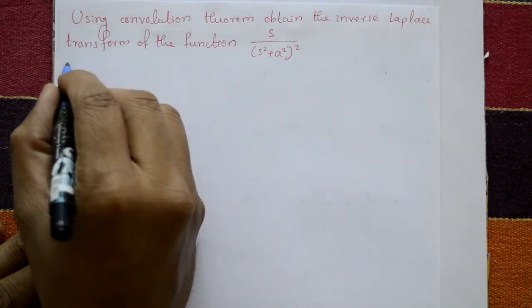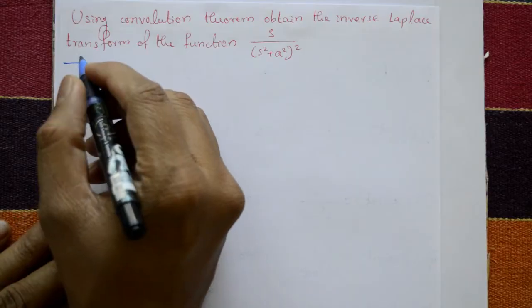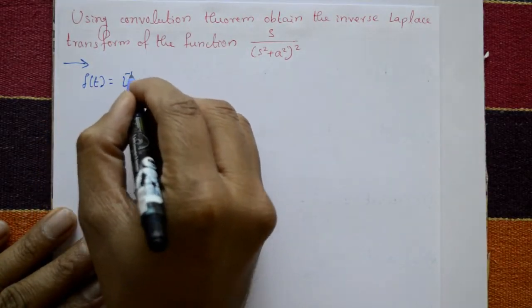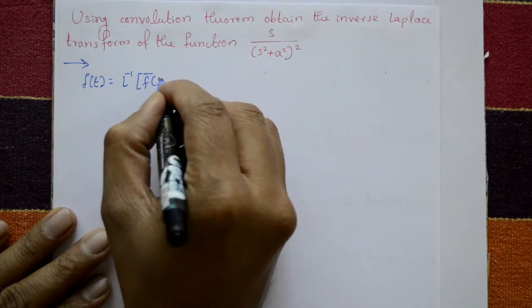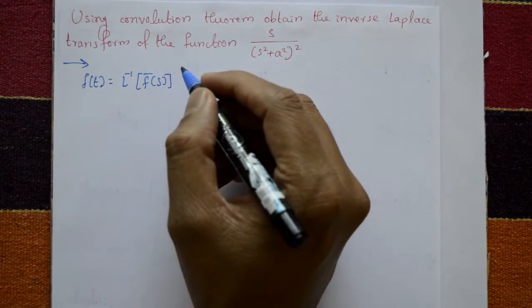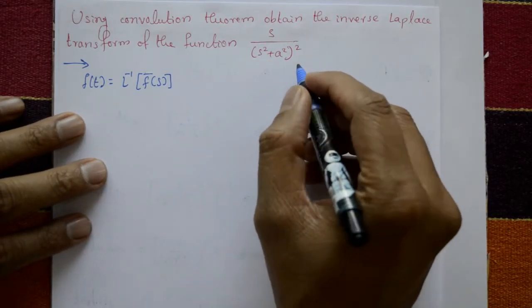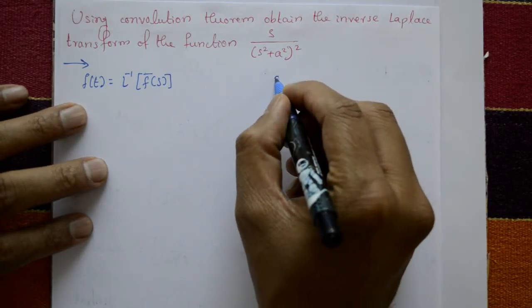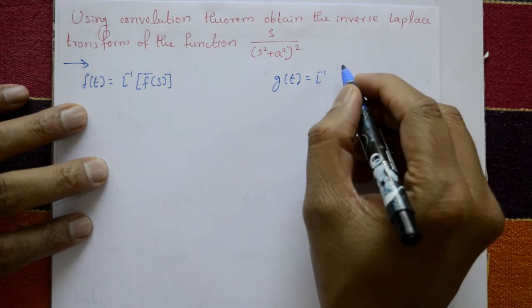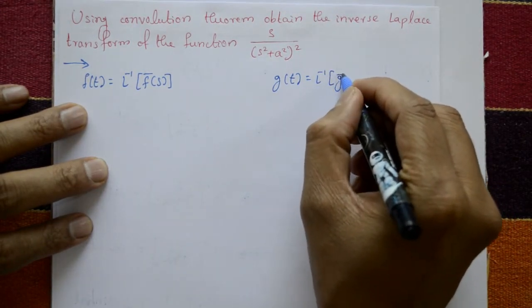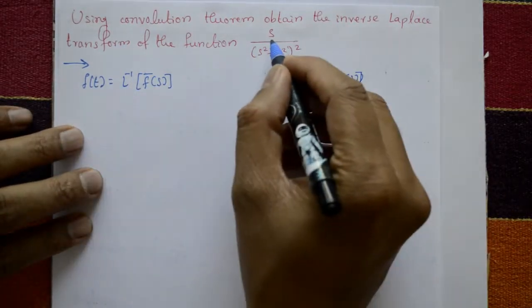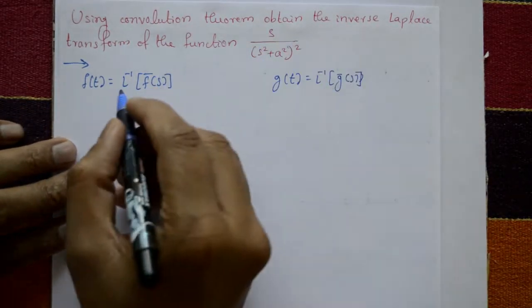Solution: f(t) is equal to inverse of F̄(s). Now, this inverse of F̄(s) and one more function is required — g(t) is equal to inverse of Ḡ(s). Now take f(t) and g(t) in this function.